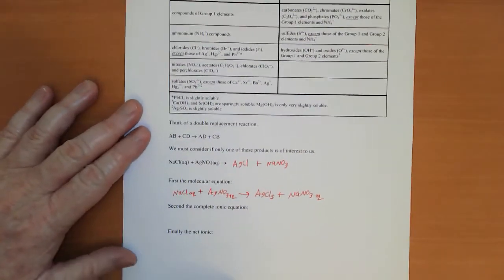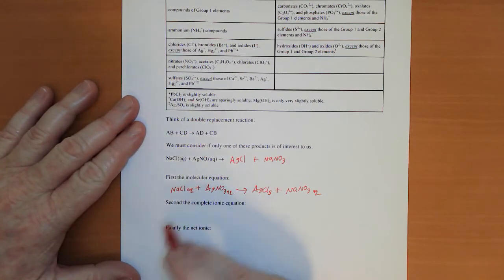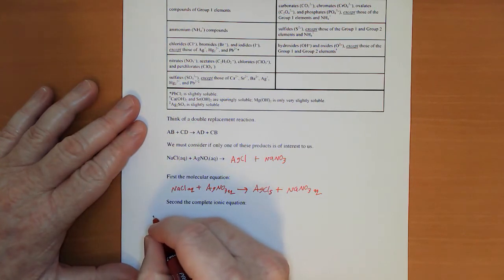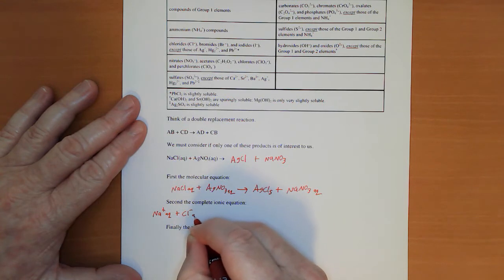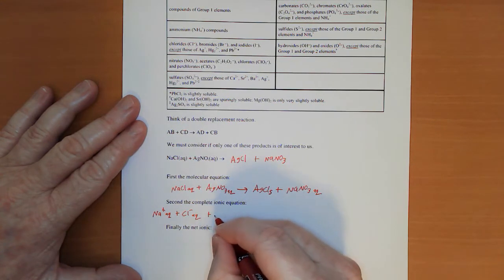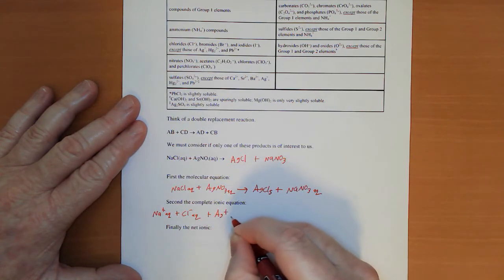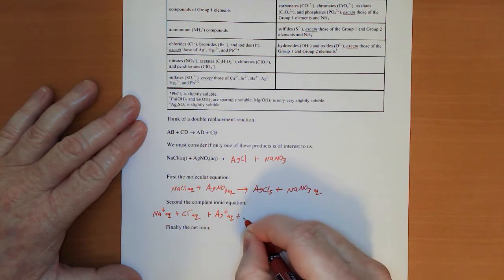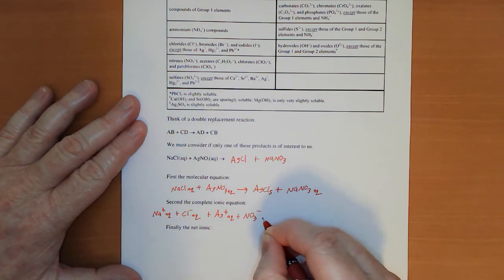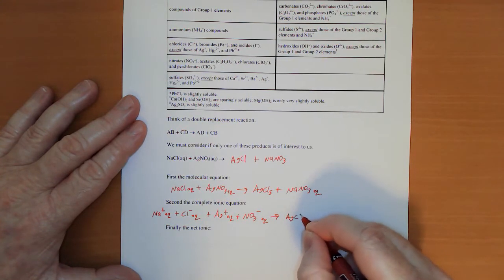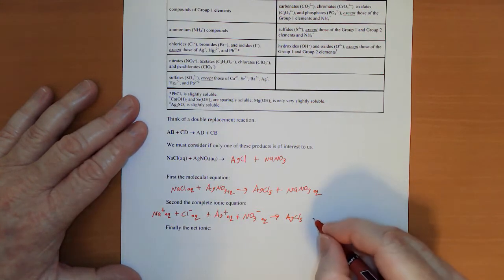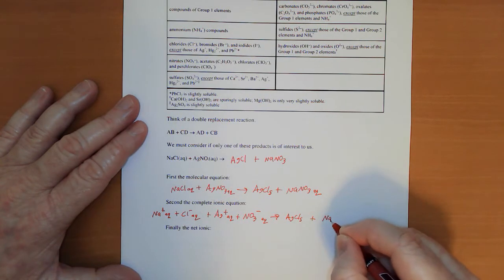What are we really looking at here? Does NaCl aqueous really exist? No, it would be Na+ aqueous plus Cl- aqueous because they're strong electrolytes, plus Ag+ aqueous plus NO3- aqueous. Then I would have the AgCl solid, it would be together because it is a solid, and I'd have the Na+ aqueous plus NO3- aqueous.